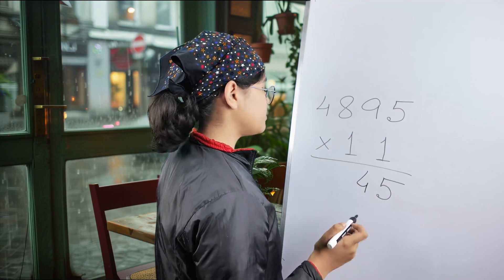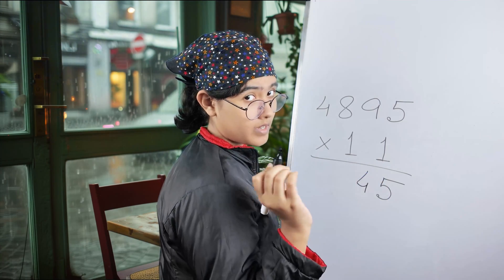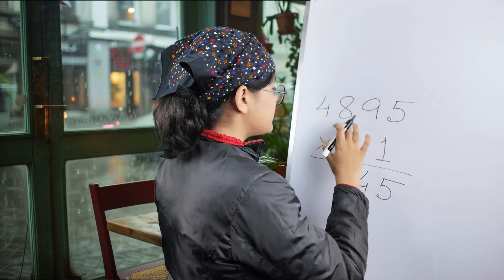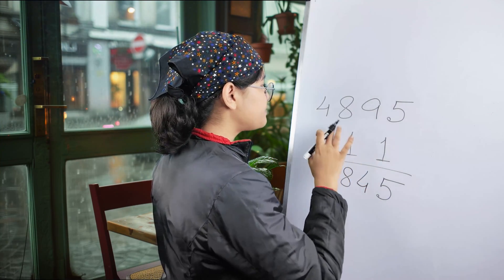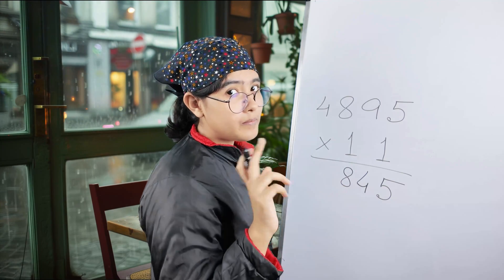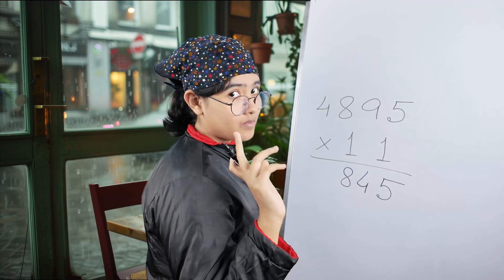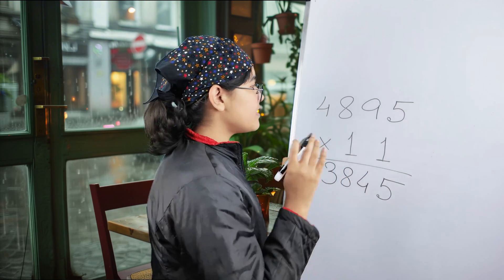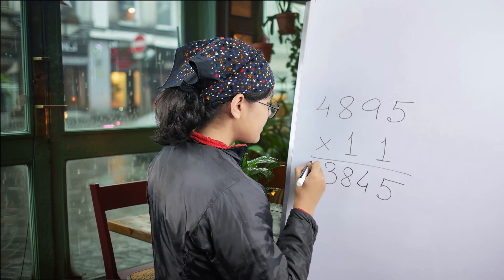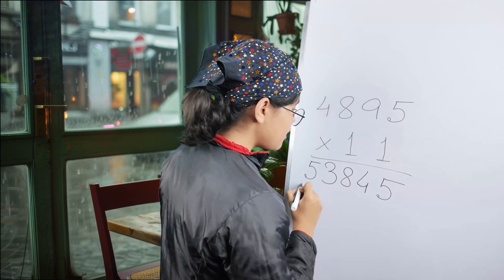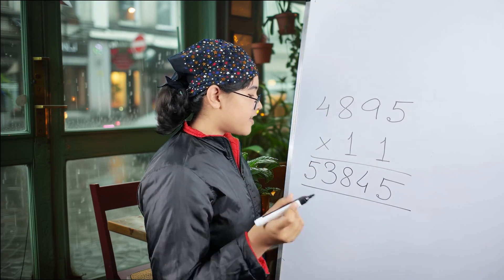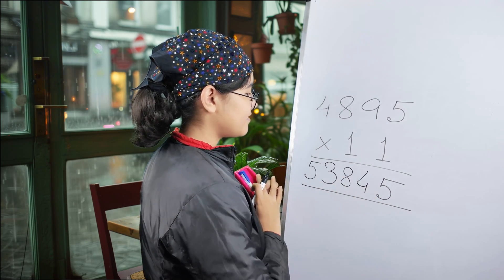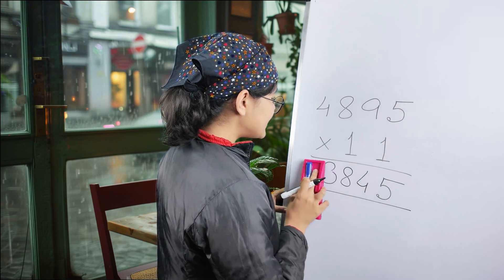8 plus 9 equals 17, plus 1. 18. 1 in hand again. 4 plus 8 equals 12, plus 1 which was in carry over, so it's 13. And 1 again. If you add with 4, it's 5. Sorry for the mistake. Your answer is 53,845. It's clear, isn't it? Quite simple tactics.